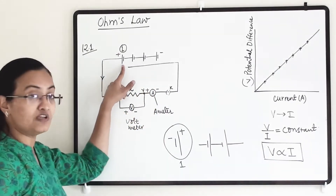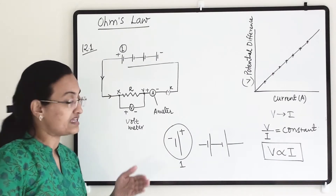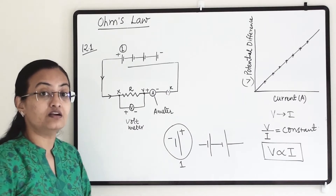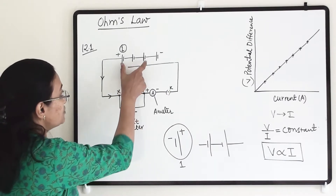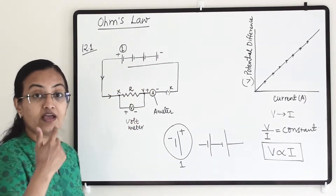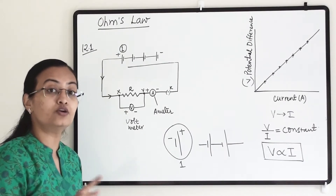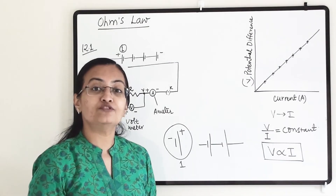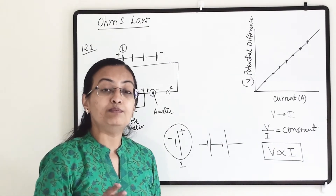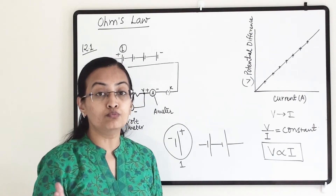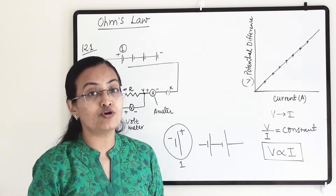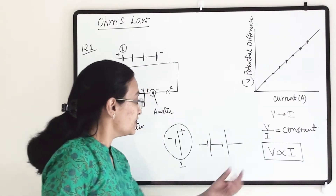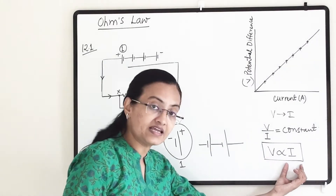If we will increase the potential difference, the current will increase; if we decrease the potential difference, the current will decrease. That means if we use one cell, the current will be less; if we use two cells, the current will increase, and similarly for three and four cells. As the potential difference increases, current also increases within the circuit, because the potential difference generates pressure so that electrons move throughout the circuit, which generates current in the opposite direction.